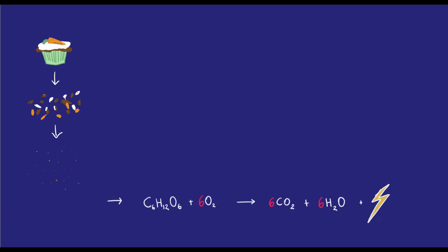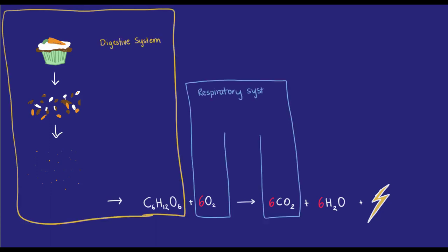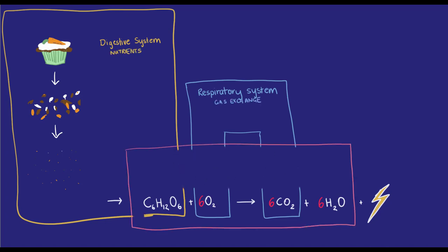Cell respiration also creates carbon dioxide as a waste product, and this needs to be removed or it would become dangerous for the cell. Gas exchange in animals is coordinated by a respiratory system working together with a circulatory system.